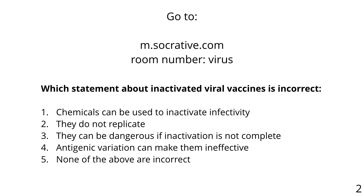The next question: which statement about inactivated viral vaccines is wrong? A, chemicals can be used to inactivate infectivity. B, they do not replicate. C, they can be dangerous if inactivation is not complete. D, antigenic variation can make them ineffective. Or E, none of the above are incorrect. Only about half of you got the right answer — none of the above are incorrect. Every one of these is right. Chemicals can be used to inactivate — we just gave examples. Inactivated vaccines by definition don't replicate. They can be dangerous if inactivation is not complete — the Cutter incident was an example. And antigenic variation can make them ineffective — that's what happens with influenza virus.